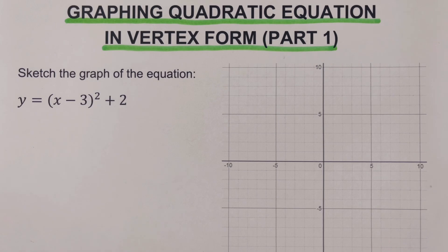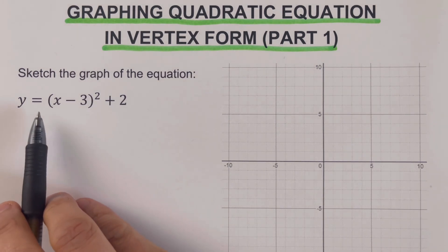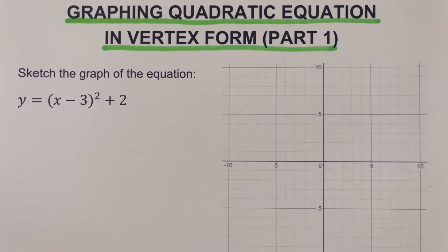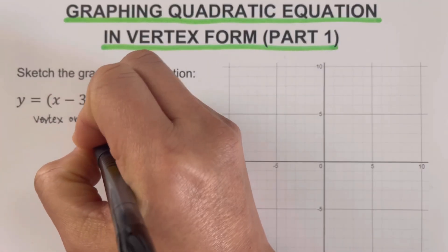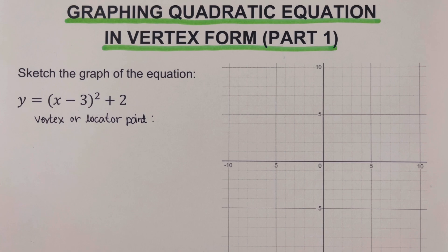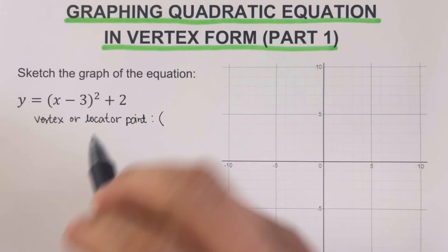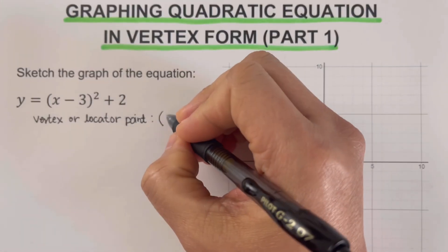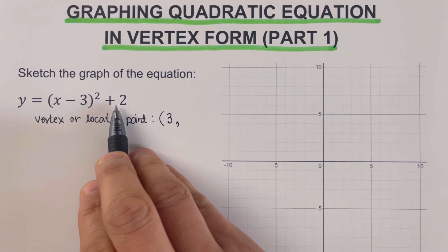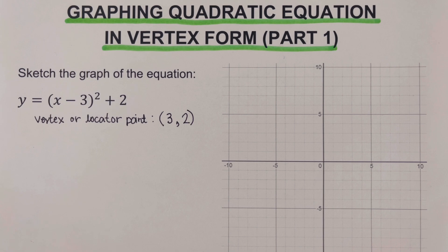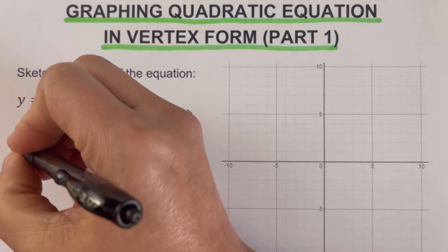Going back to the problem, we are given y equals the quantity x minus 3 squared plus 2. The first step is to determine the vertex, or locator point. The vertex is the point (h, k), so we switch the sign of h to get positive 3, and keep the sign of k to get positive 2. So our locator point is (3, 2). The second step is to draw a table of values.